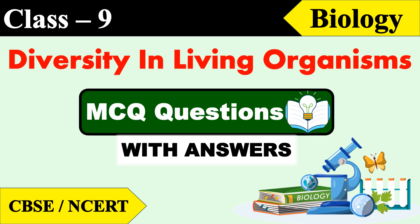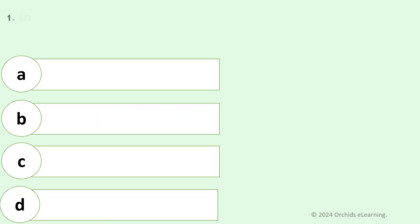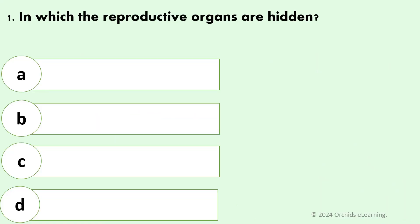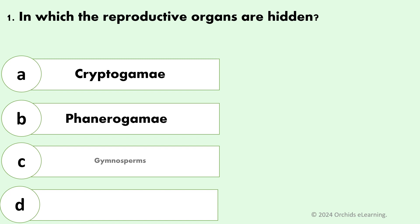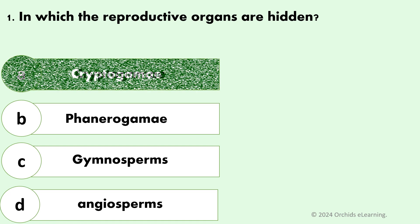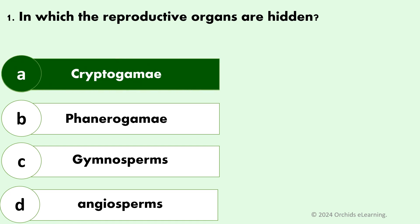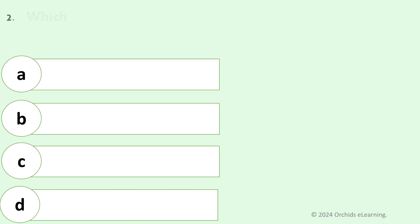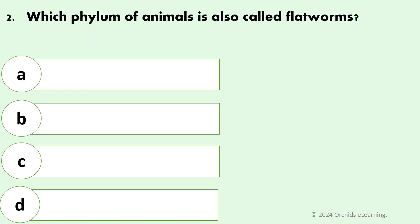Diversity in living organisms MCQ questions with answers, Class 9 Biology. In which organisms are the reproductive organs hidden? Answer: A — Cryptogamae. Which phylum of animals is also called flatworms?